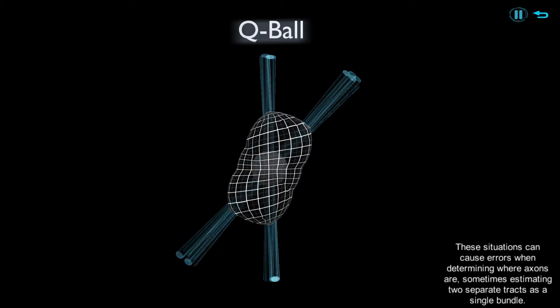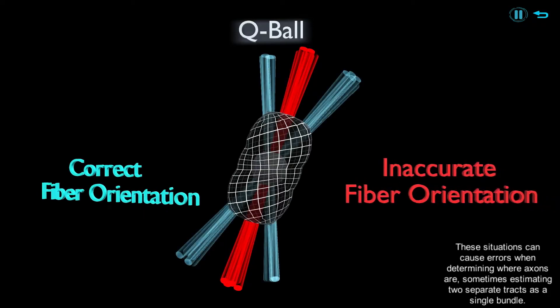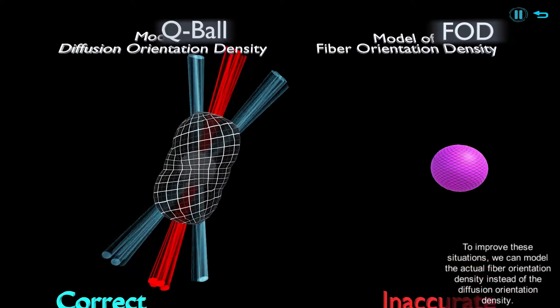These situations can cause errors when determining where axons are, sometimes estimating two separate tracts as a single bundle. To improve these situations,